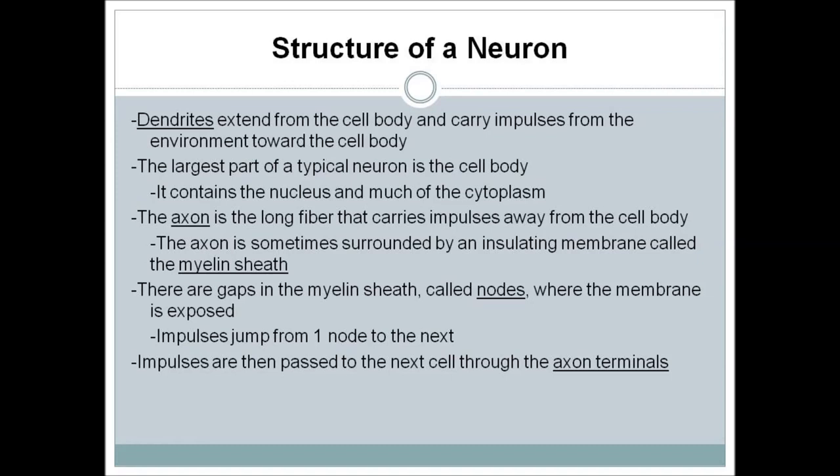To understand what a neuron is, we break down its structure. Dendrites extend from the cell body and carry impulses from the environment toward the cell body. The largest part of a typical neuron is the cell body, which contains the nucleus and much of the cytoplasm.